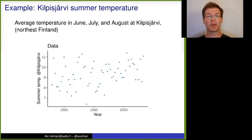As an example, I use Kilpisjärvi summer temperature. Kilpisjärvi is in the very northern part of Finland, so that also in summer it's quite a cool place. And this shows average temperature in June, July, and August, in different years starting from the 1950s to 2010.